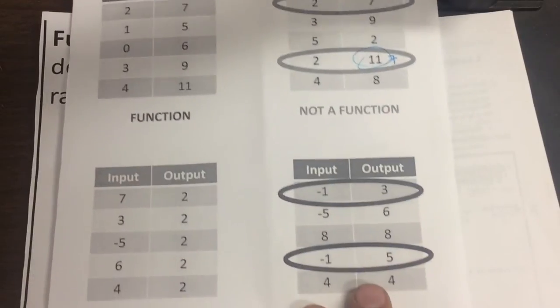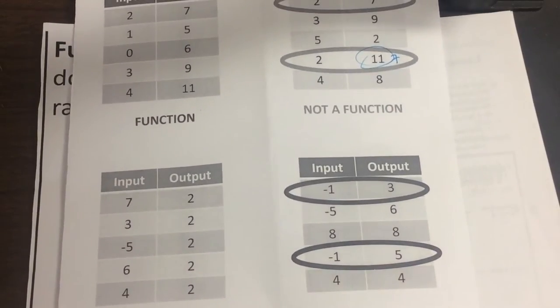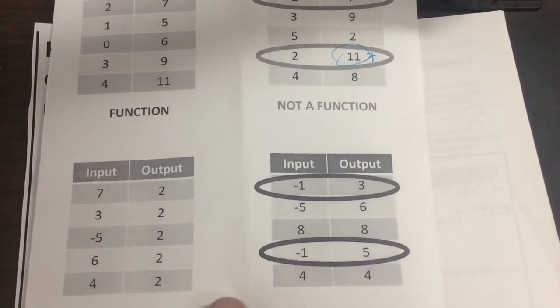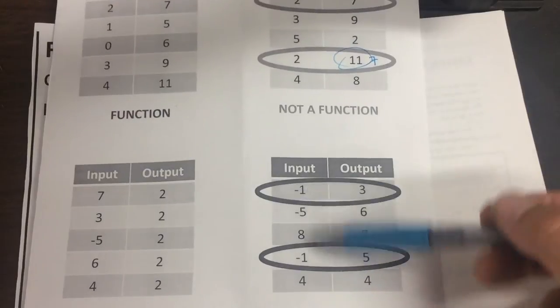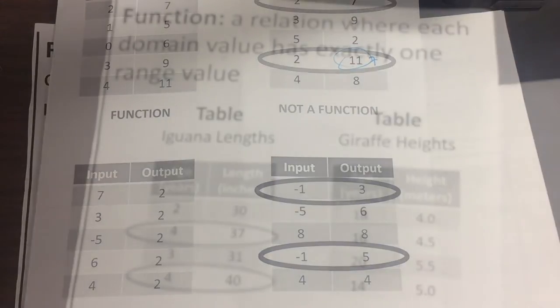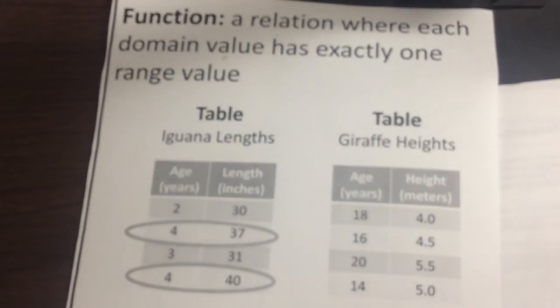If we look down here, oh look at this. Every single input gives an output of two. That's okay. That is still a function. If we look over here though, we input negative one twice. And we get a three and a five. Those are two different answers for the input of negative one. Therefore, this cannot be a function.